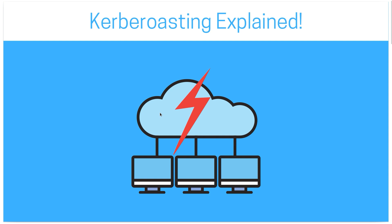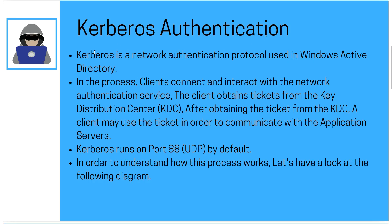Kerberoasting is an Active Directory based attack, but first of all in order to understand how this attack works, we need to understand how Kerberos authentication works. Kerberos is a network authentication protocol used in Windows Active Directory. In the process, clients connect and interact with the network authentication service. The client obtains tickets from the KDC, or the Key Distribution Center, and after obtaining the ticket the client may use it to communicate with the application server.